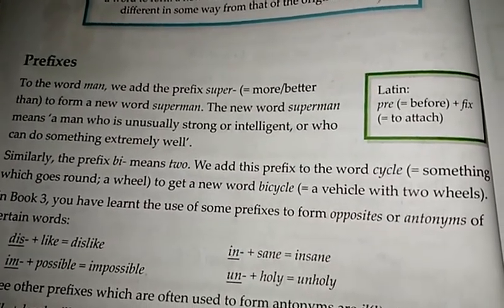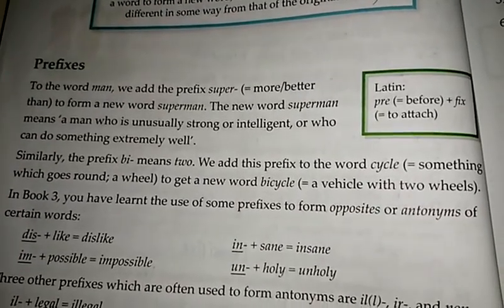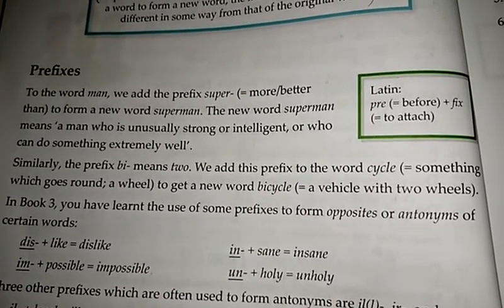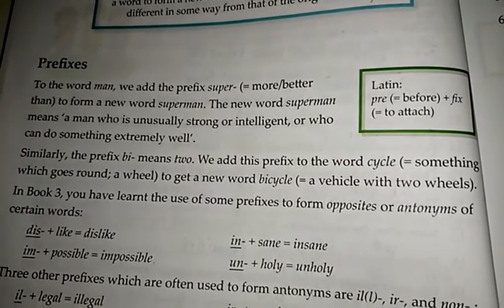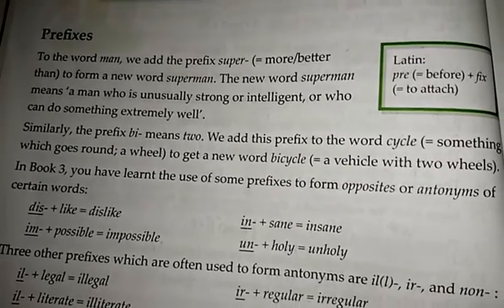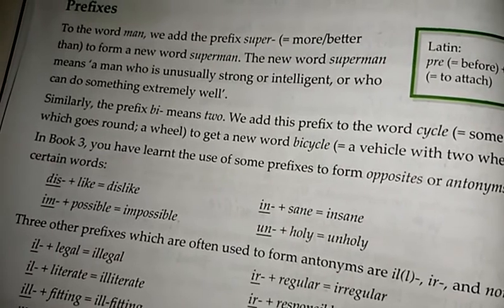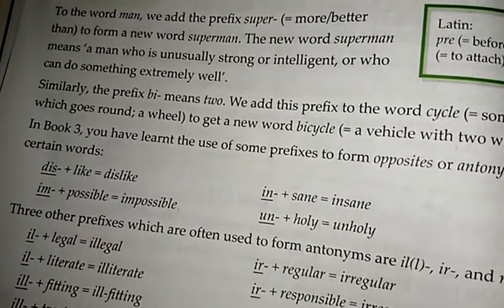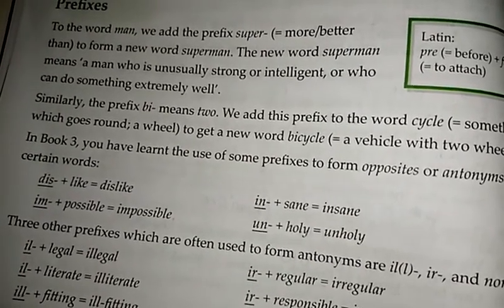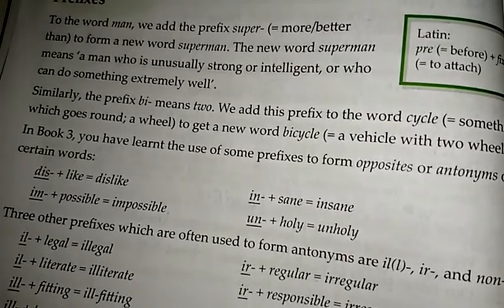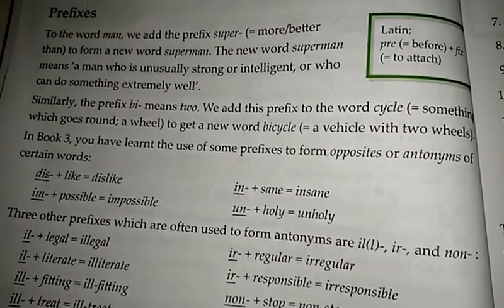In Book 3, you have learnt the use of some prefixes to form opposites or antonyms. For example: 'like' becomes 'dislike'; 'possible' becomes 'impossible' — meaning not possible, na-mumkin; 'sane' becomes 'insane'; 'holy' becomes 'unholy'. These prefixes completely change the meaning of the words.